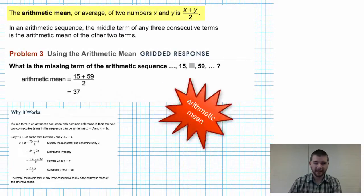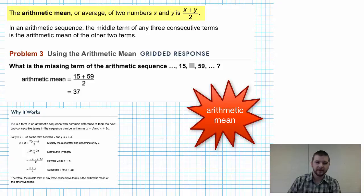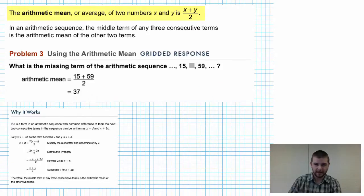The arithmetic mean or average of two numbers x and y is x plus y divided by 2. In an arithmetic sequence, the middle term of any three consecutive terms is the arithmetic mean of the other two terms.